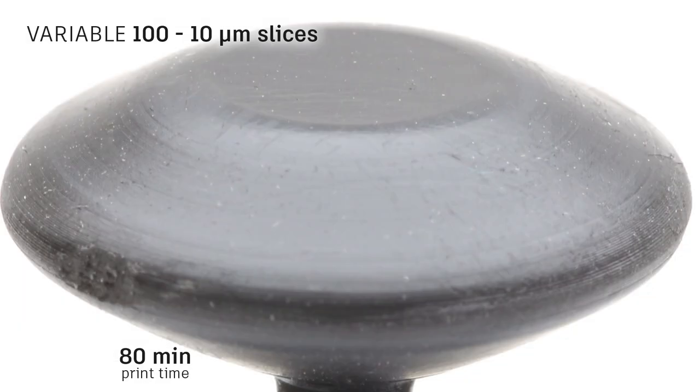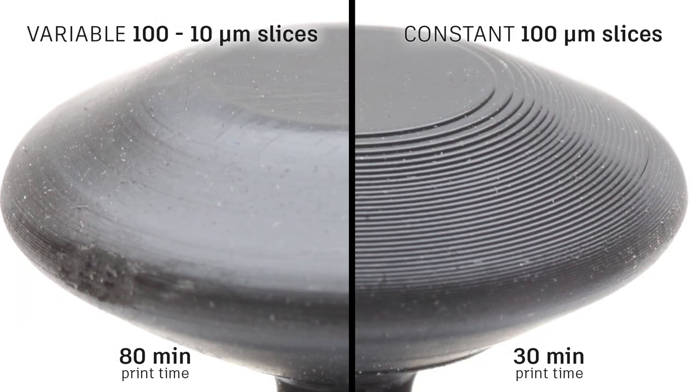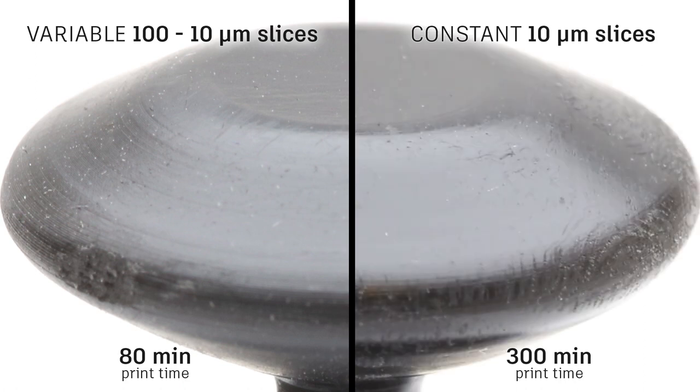And here's the variable layer print close up. Compare that to 100 micron layers. There's a big difference. Now compare it to 10 micron slices. The variable layer slices look almost as good, and it prints much faster.